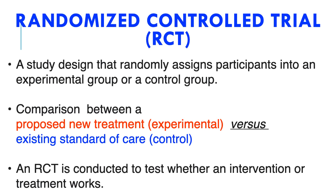What is an RCT? A randomized controlled trial is a study where you divide patients into two groups. The first group is the proposed new treatment or experimental group. The second is the existing standard of care control group, or it can be a placebo group.